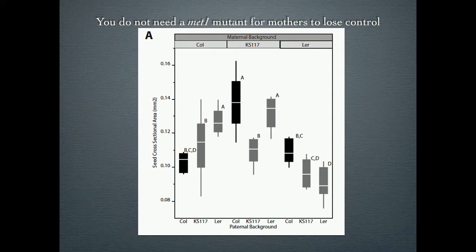This gets me more to my story. You can knock out polycomb, you can knock out methyltransferases - these mutants are going to have very strong phenotypes. What I'm more interested in is similar things that happen with natural variants. Nature has done a huge number of experiments, and if you start to take different lines from different parts of the world that have adapted to different situations and start crossing them, you can see very similar effects to this loss of imprinting.